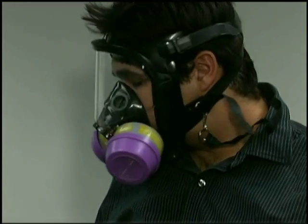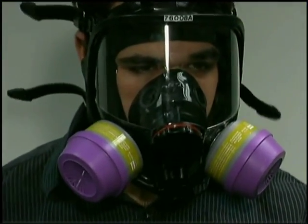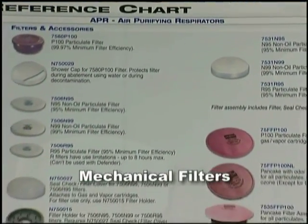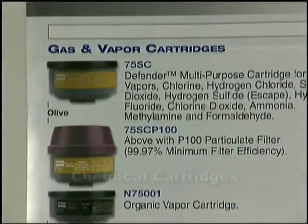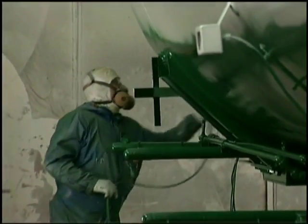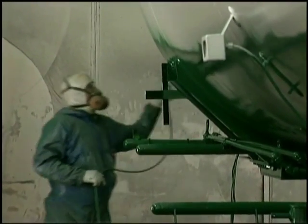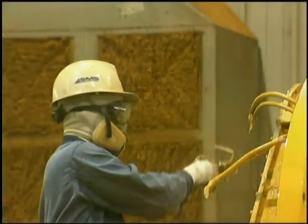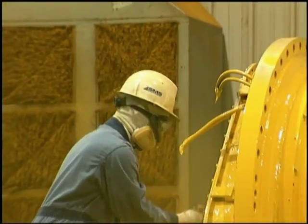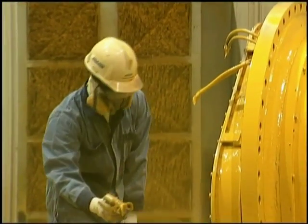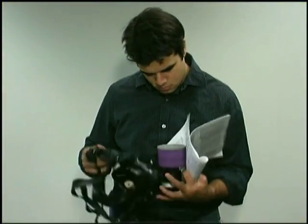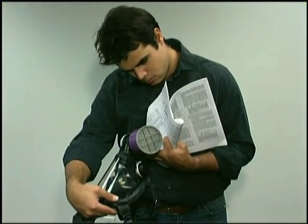Some cartridges may also be stacked and used in combination when more than one contaminant is present. Ensure that both sides are changed together. There are two basic types of filters: mechanical filters collect solid particles like dust, fumes, or mists; chemical cartridges collect gases or vapors. As a mechanical filter fills up, it becomes clogged and harder to breathe through — a sure sign it needs replacing. Some have end-of-service life indicators to show when they are no longer safe to use.